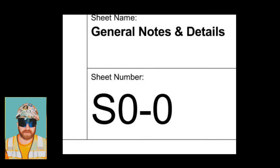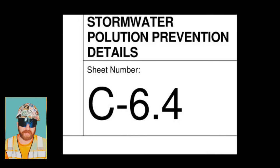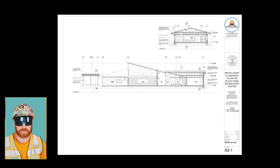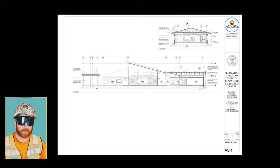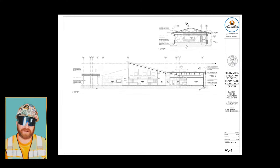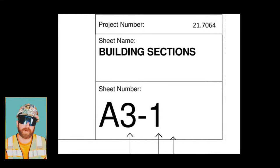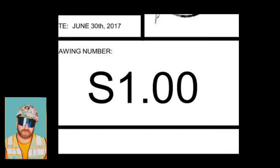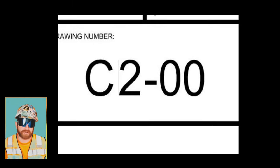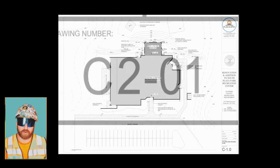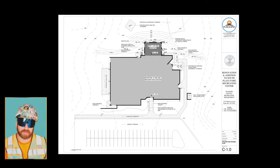Structural is S, civil is C, landscaping is L — you get the point. So if somebody asks you to look at the architectural drawings, find the A in the bottom right corner and you're there. Following the letter signifying the section, you'll usually see two or three numbers, so the full sheet number could be A100, S100, C200, C201, etc. It all depends on the architect or engineer numbering those pages.